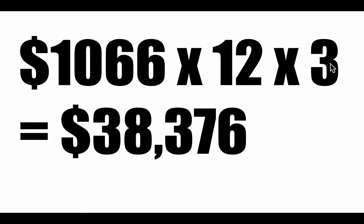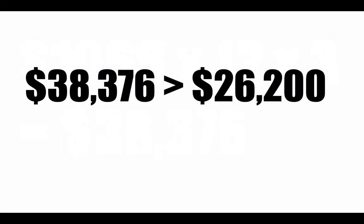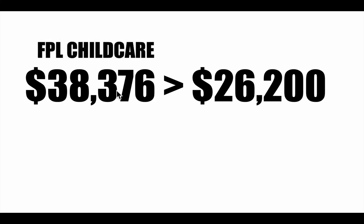We take that and triple it, because we're assuming it's a third of all your money. In that case, we get $38,376. Now, this number is much bigger than the actual federal poverty line for a family of four. If we base the poverty line on child care, we get this number; if we base it on food, we get this number. And look at that — it's quite a far distance apart.